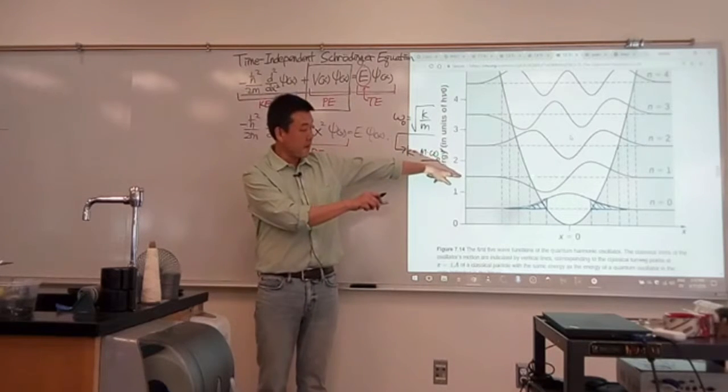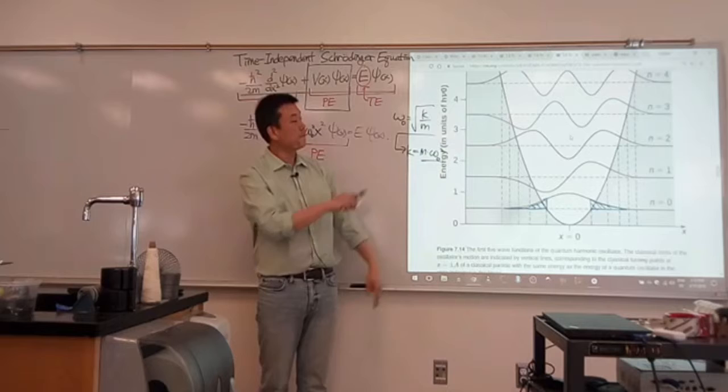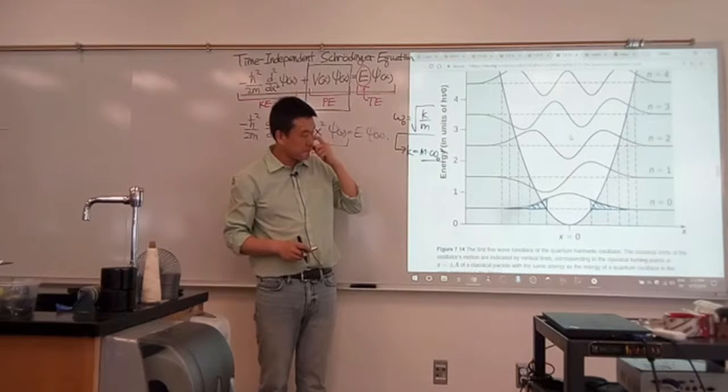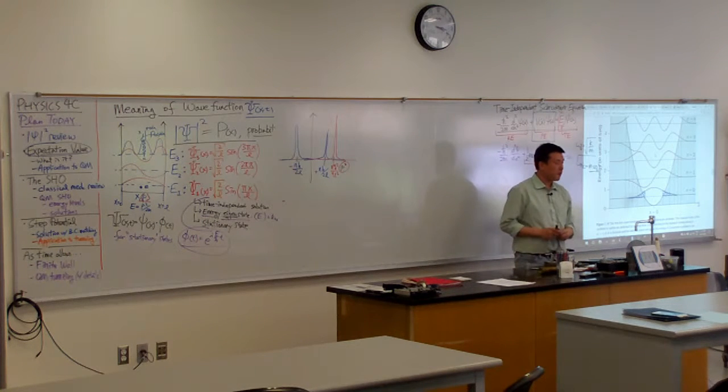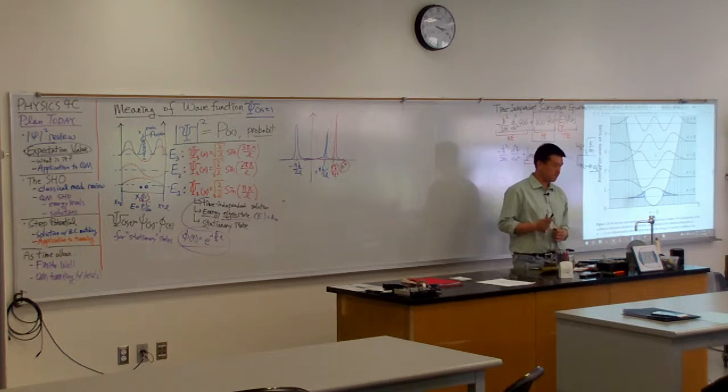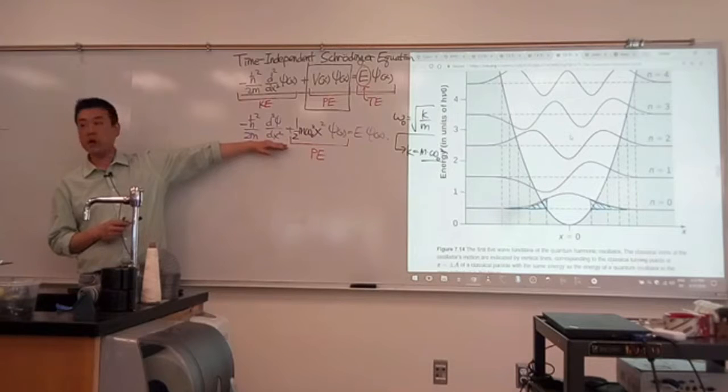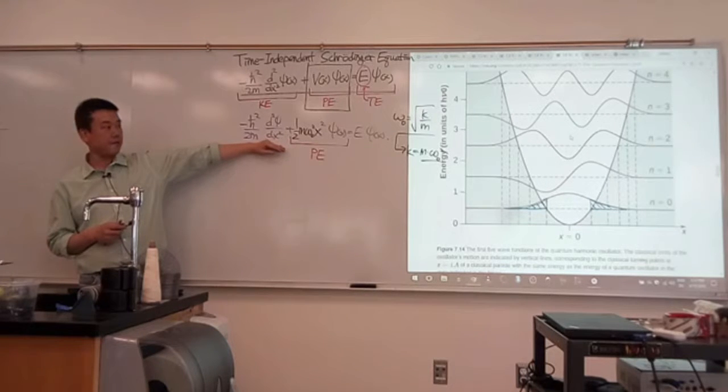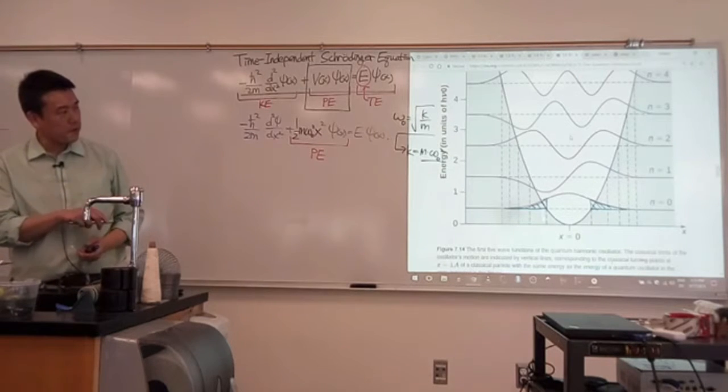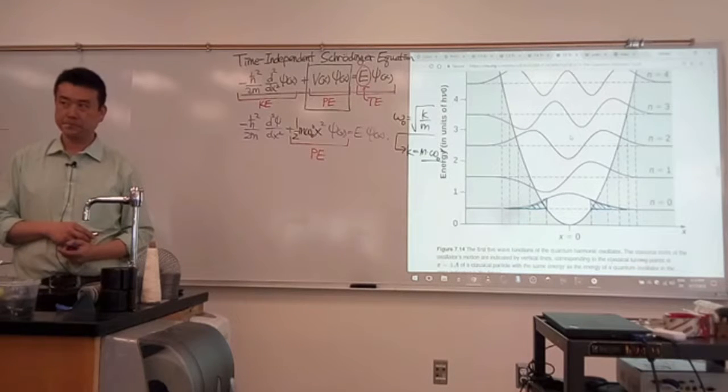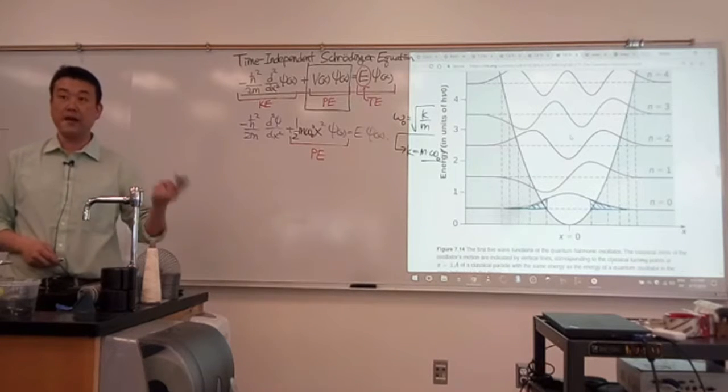The same thing for this higher energy. This is the classically forbidden region. You have some wave function here. I think we will have time to talk about this more as we do step potential. But if you have some intuition for differential equations, this is how you can kind of think about it. What do you notice about these wave function solutions? What do you see in this classically allowed region as you go to higher and higher energy?